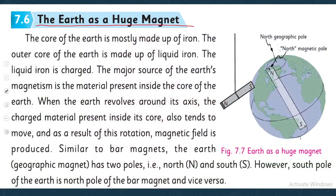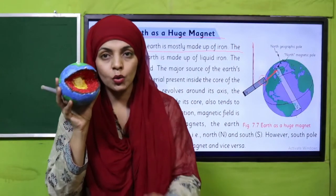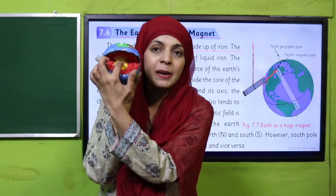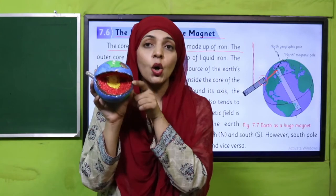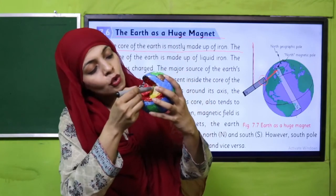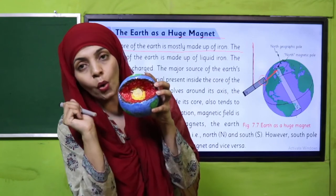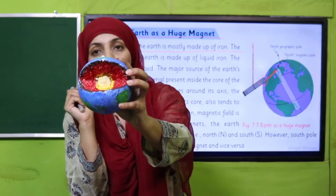The Earth as a Huge Magnet — here you can see the suspended magnet; the south will be aligned towards the north of the Earth. Why? Because opposite poles attract and like poles repel. The core of the Earth is mostly made up of iron. What do we mean by 'core of the Earth'? If you cut down the Earth and look inside, the very deep inside part of the Earth is known as the core. This yellow part is known as the core of the Earth.